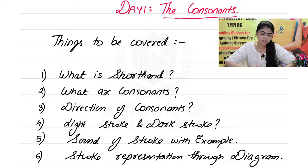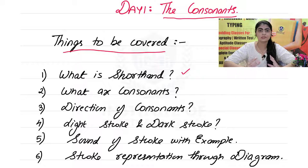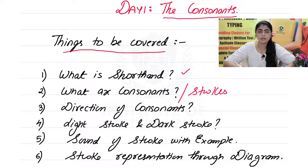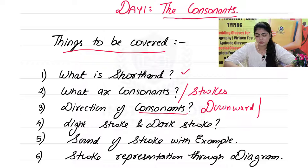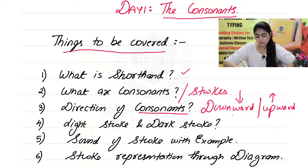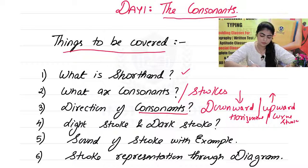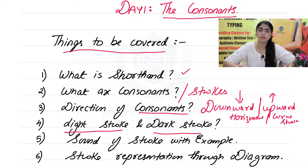As you can see on the screen, the things covered in this video are: first, what is shorthand — shorthand is a language used to write things in short. Second, what are consonants — consonants are basically your strokes, or letters, used to form a word. Third, direction of consonants — a stroke can be downward, upward, horizontal, or a curve stroke. We will also cover light strokes and dark strokes — whether you press the pencil hard or keep your hand light.